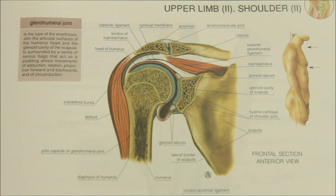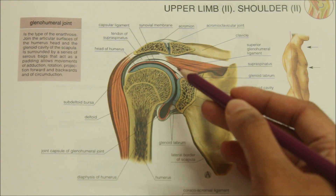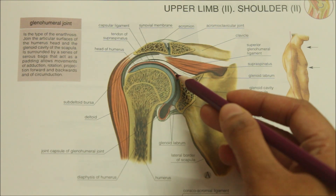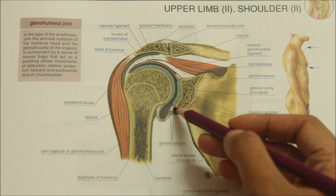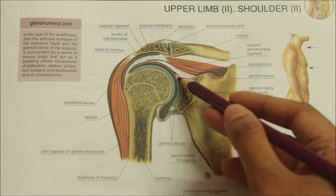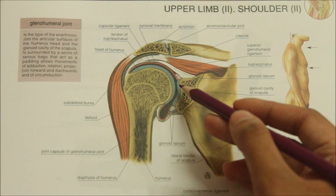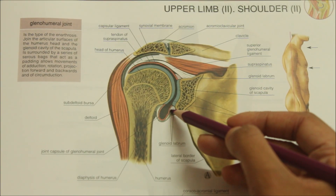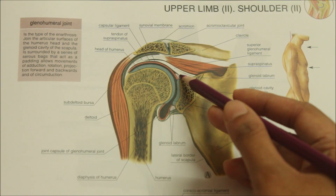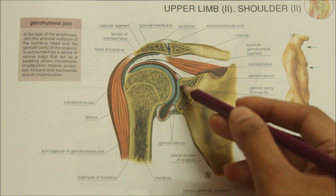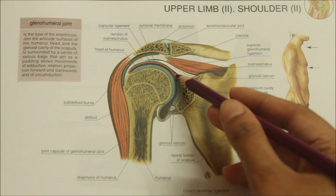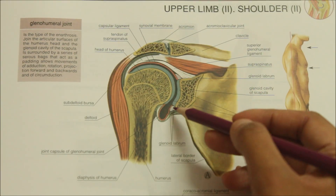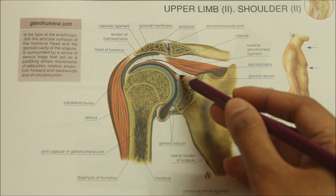The third structure is the glenoidal labrum. The glenoid labrum, as you can see here, is a fibrocartilaginous structure attached around the margin of the glenoid cavity.